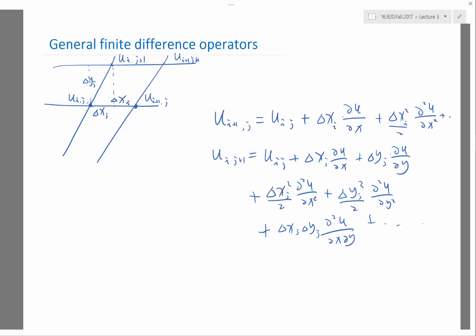For example, let's imagine you want to approximate partial U partial Y. How do you do that? You try to perform a linear combination of different grid points to cancel as many terms as possible and leave the term on this particular coefficient to be one.